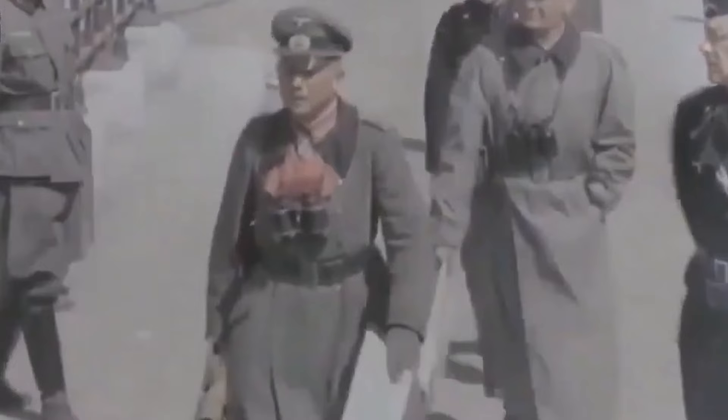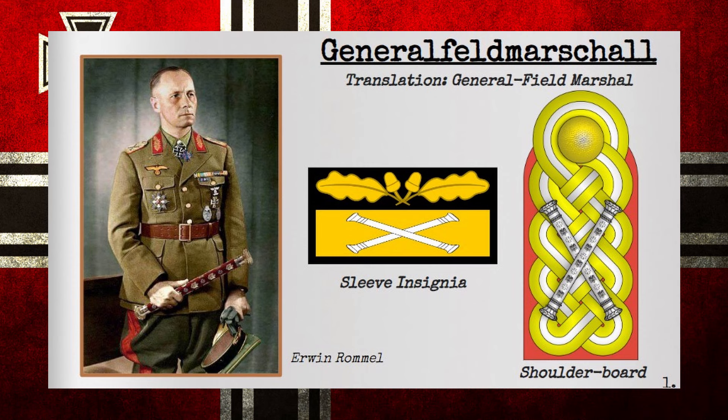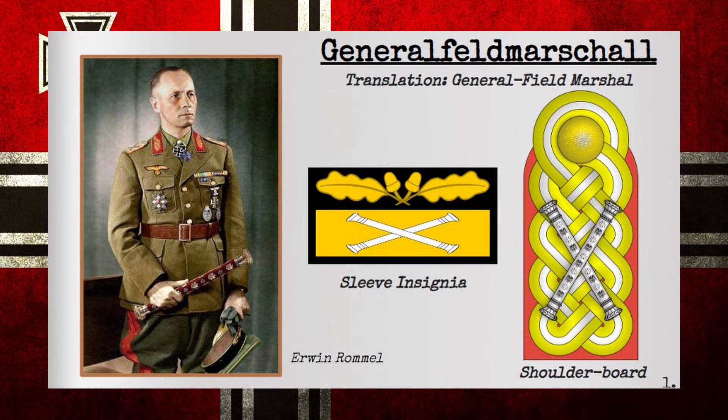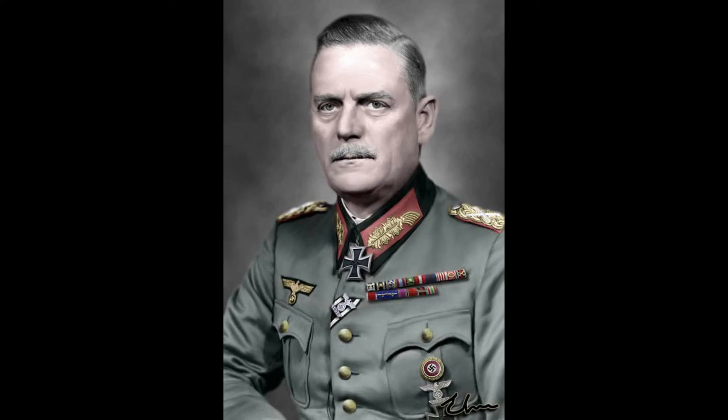The rank of Generalfeldmarschall, or General Field Marshal, was the highest attainable rank bestowed by the Führer Adolf Hitler. Unlike its predecessor within the Austro-Hungarian and German empires, the rank was bestowed onto 20 of Hitler's best field commanders, which included Keitel, von Rundstedt, Rommel, von Manstein, and von Paulus. The rank's role would be to command an army group as designated by the Oberkommando des Heeres. Above that would be the Oberkommando der Wehrmacht, or the supreme commander position held by Hitler. Its insignia would consist of a golden braided epaulette, with a double marshal's baton crossed on top of it.